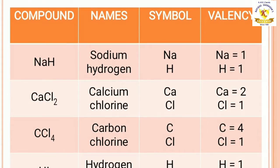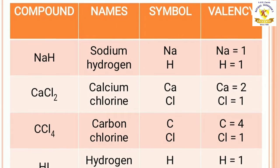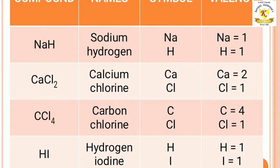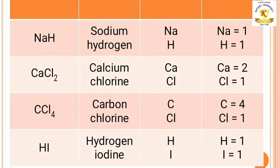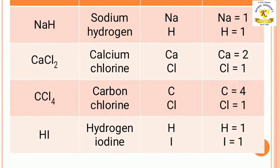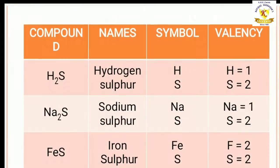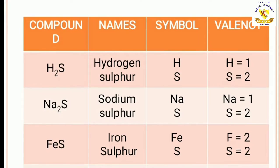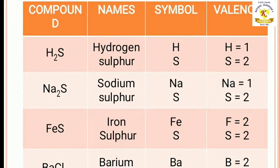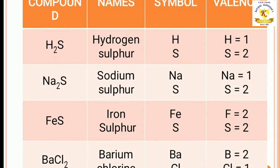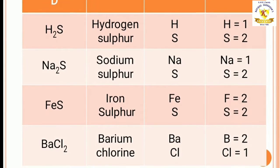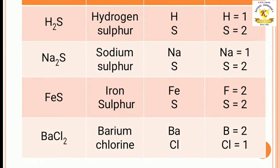The next compound is NaH. Sodium symbol Na with valency 1; hydrogen symbol H with valency 1. The rest you have to write as shown. Write it correctly, children. I will read one more for you — compound H2S. Hydrogen symbol H with valency 1; sulphur symbol S with valency 2. Now children, copy correctly the symbols and valencies. Don't make a mistake.